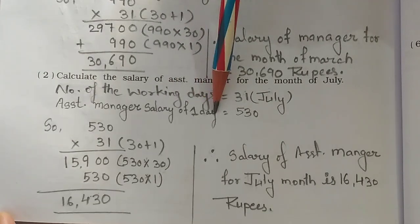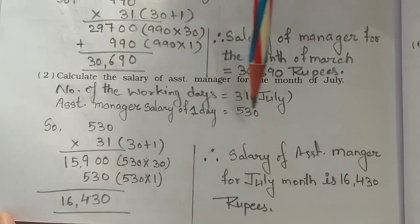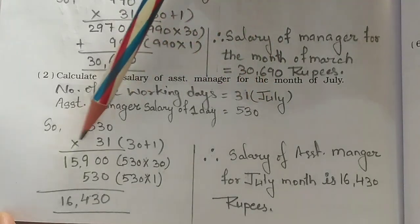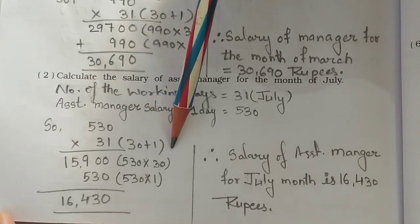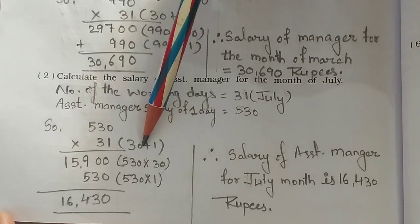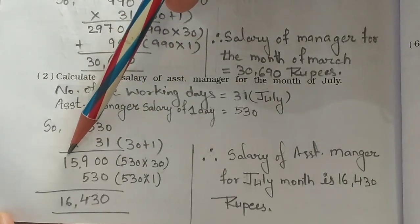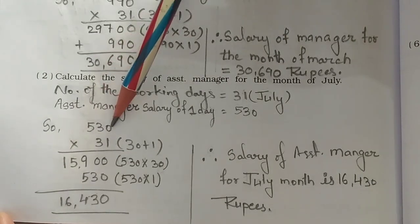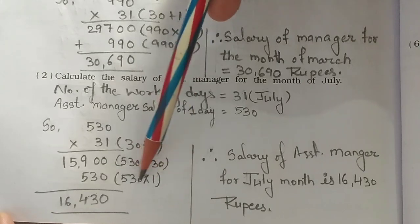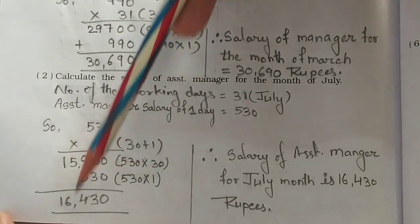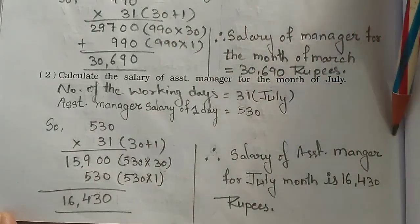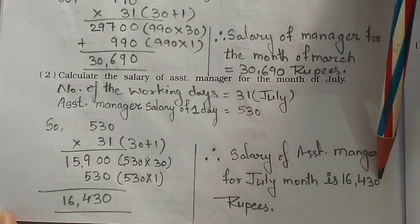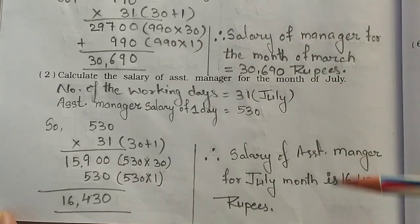The assistant manager's per day salary according to the question is 530 rupees. We multiply: 530 × 31. Breaking it down: 530 × 30 = 15,900, and 530 × 1 = 530. Adding these gives 16,430. Therefore, the salary of the assistant manager for the month of July is 16,430 rupees.